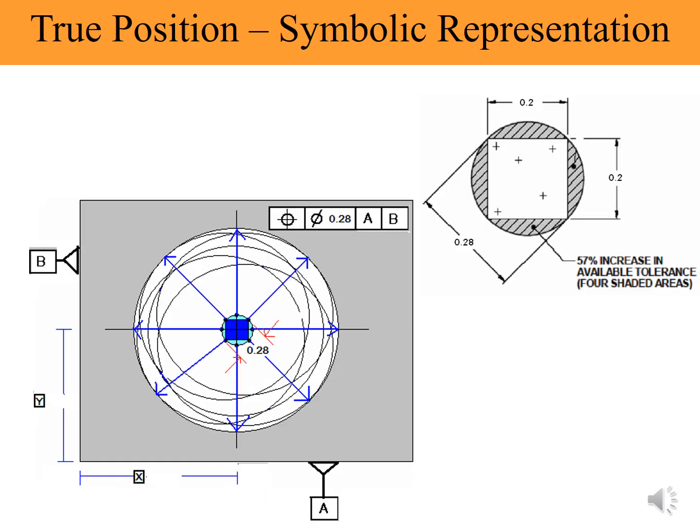If instead of a square tolerance zone, a diametrical tolerance zone is applied, it gives 57 percent more tolerance. This is a direct benefit of GD&T. Just applying tolerances the GD&T way gives a guarantee of assembly: the part qualified OK will surely assemble, and the part which is disqualified will never get assembled.